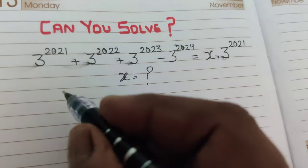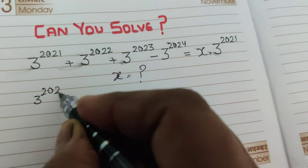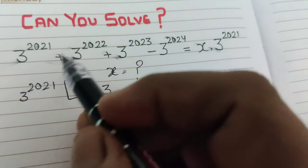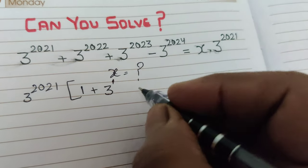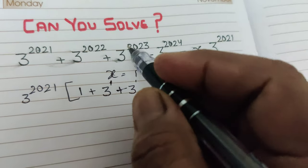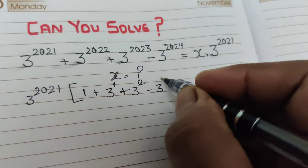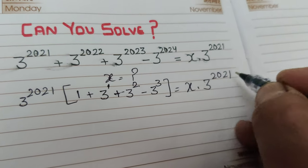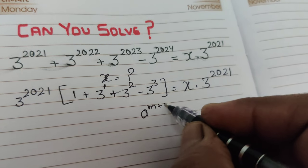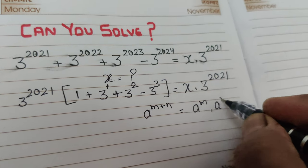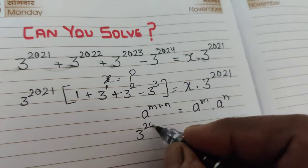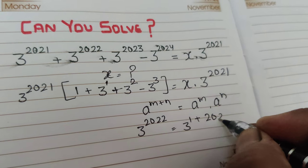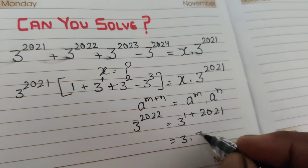Now for the solution, we take the common factor 3 raised to power 2021. So here we get 1, then 3, then applying the exponent law: a raised to power m plus n equals a raised to power m times a raised to power n. For example, 3 raised to power 2022 can be written as 3 raised to power 1 times 3 raised to power 2021. Similarly we separate 3 raised to power 2021 from each term.